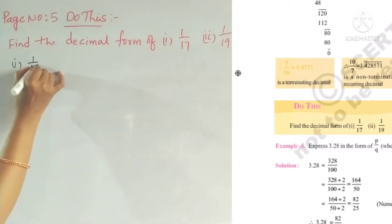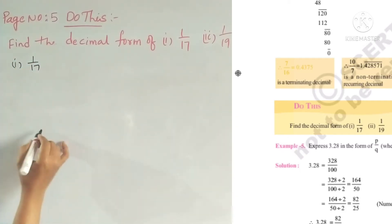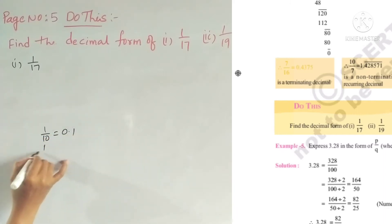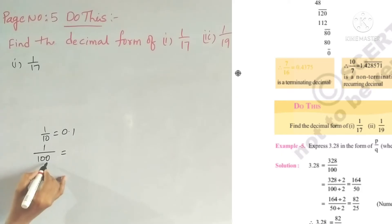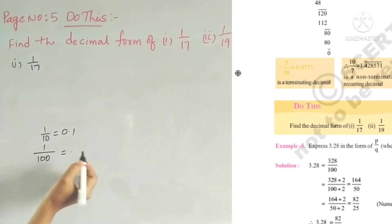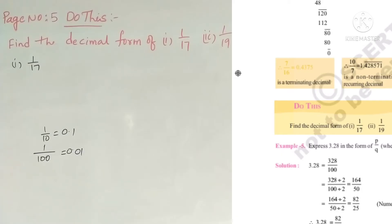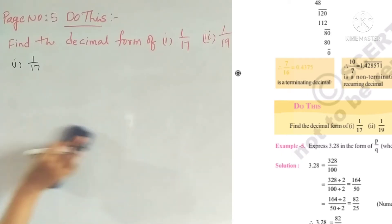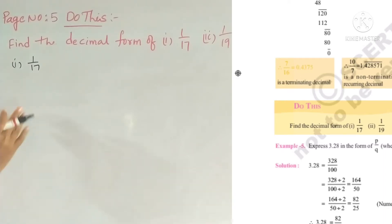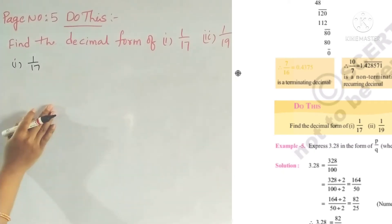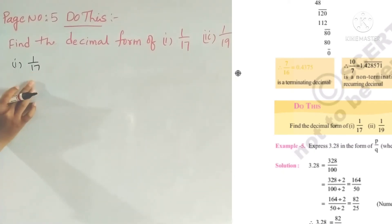First, 1 by 17. When the denominator is 10, 100, or 1000, finding the decimal form is easy. For example, 1 by 10 is 0.1, 1 by 100 is 0.01. But here we have 17 in the denominator. 17 is a prime number, so we cannot multiply it to get 10, 100, or 1000 easily. We have to use division.